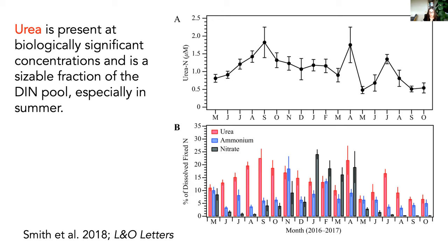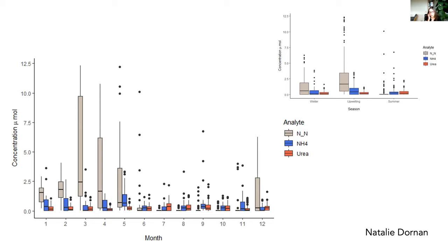In my lab, Natalie has taken over measurements of urea and ammonium in the monthly time series, updating what Jason started. This shows pretty much the same thing — a really nice graphical depiction of the seasonal cycle of different nitrogen species. The grayish bars are nitrate concentration — high in March and April during upwelling, but in summertime the relative importance of ammonium and urea is much higher. Breaking it down by season, in the summertime urea concentrations are much higher than nitrate and nitrite.